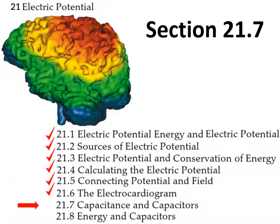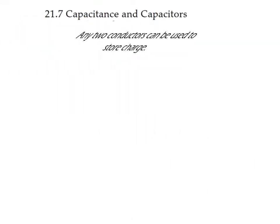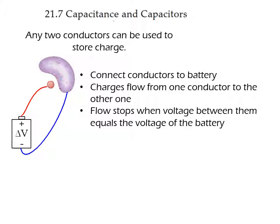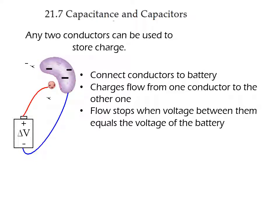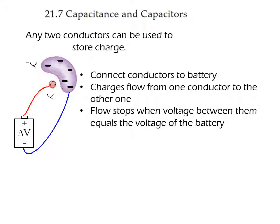In this video we're going to see section 21.7 on capacitance and capacitors — a new concept. A capacitor is any device that can be used to store charges, and in principle any two conductors can be used. Here we have two pieces of metal connected to a battery. As soon as the battery begins to operate, it draws charges from one conductor and transfers them to the other, and the charge builds up as Q and minus Q on the two conductors.